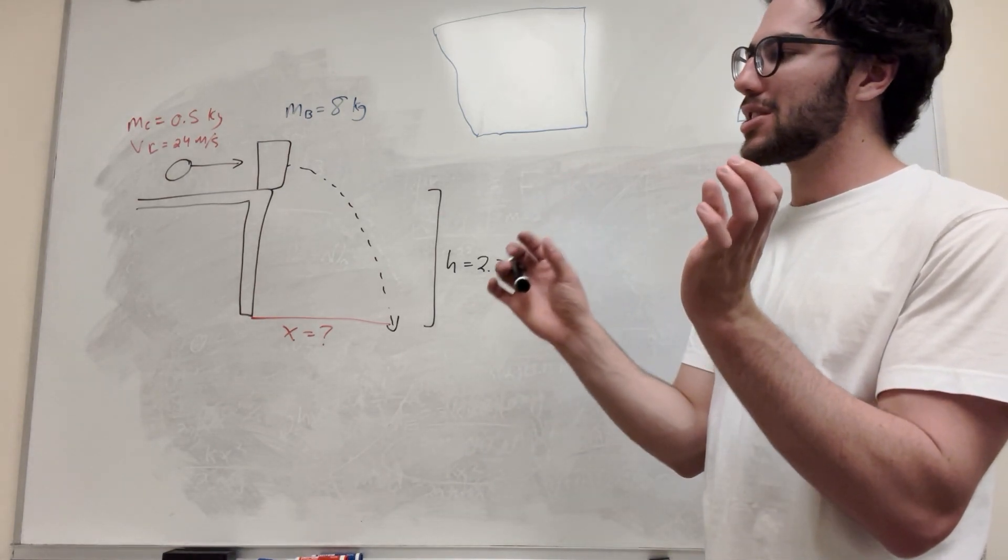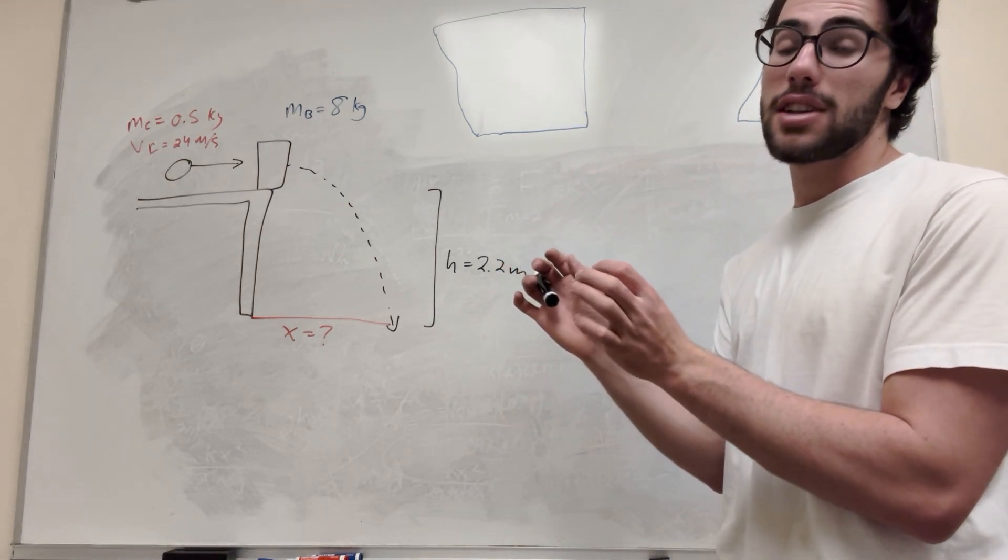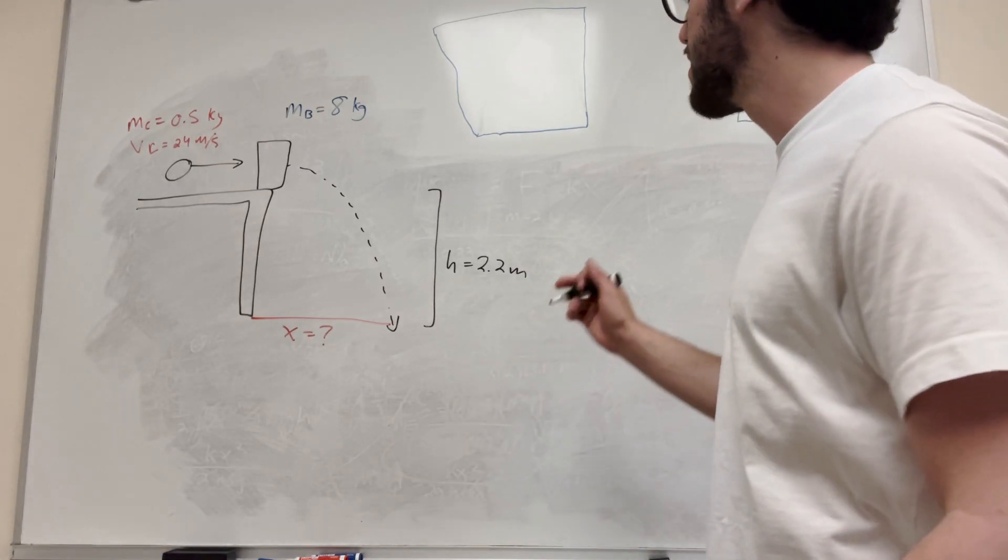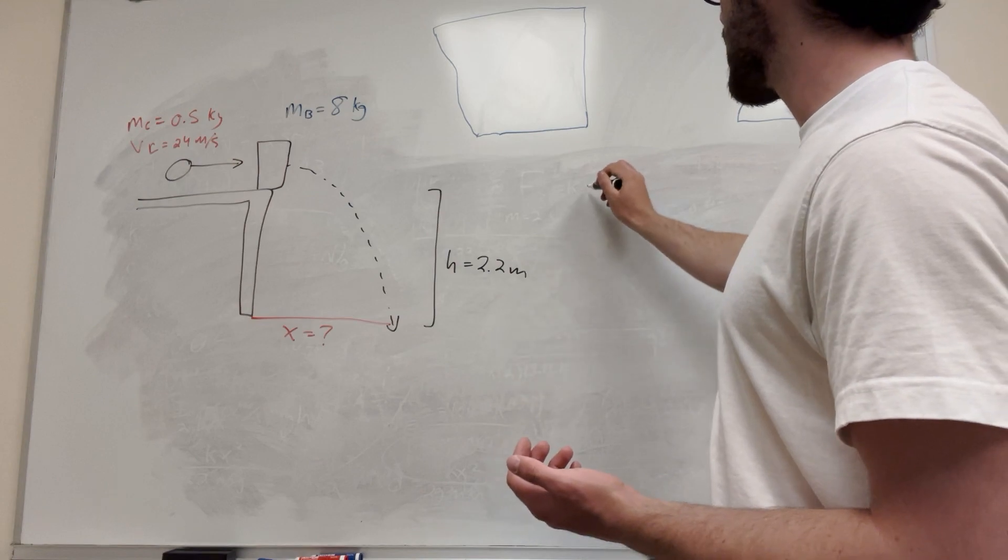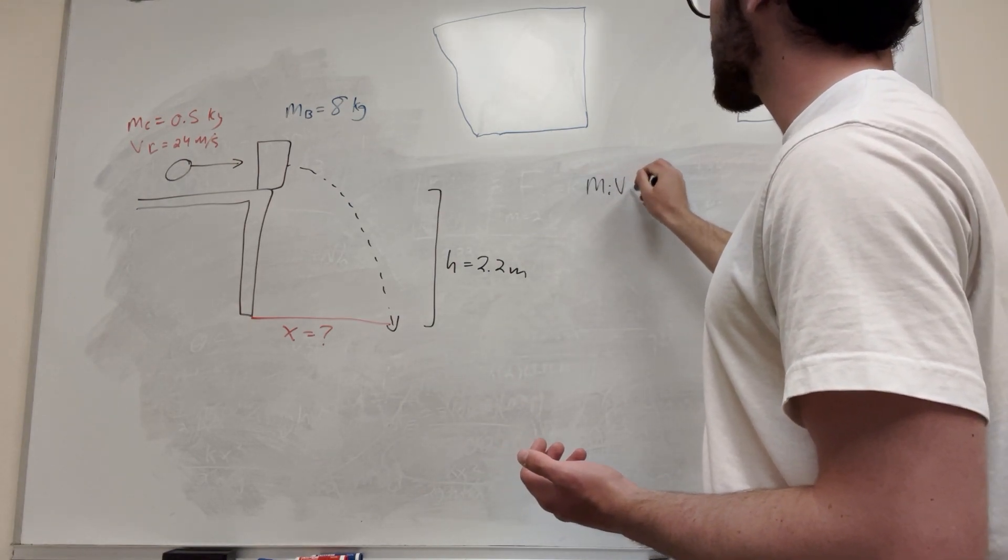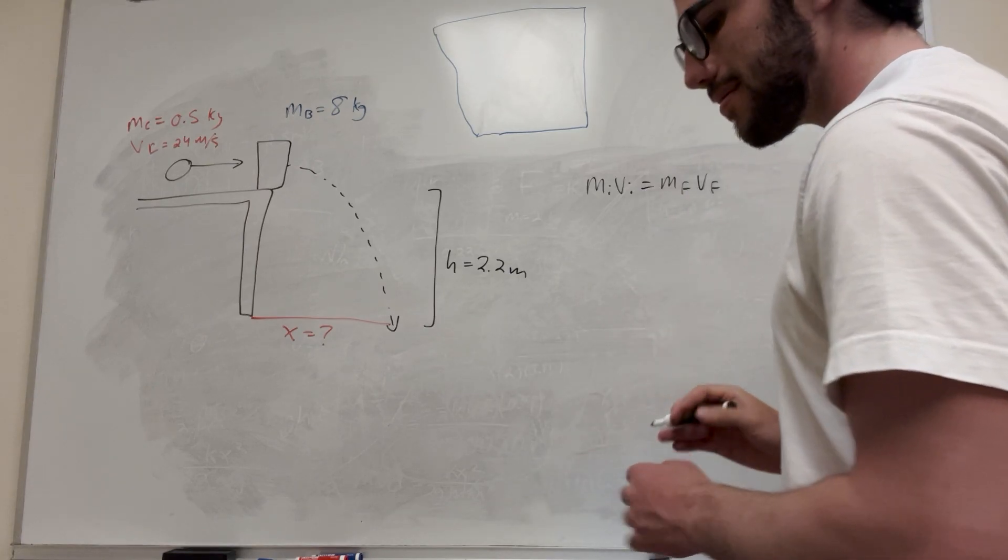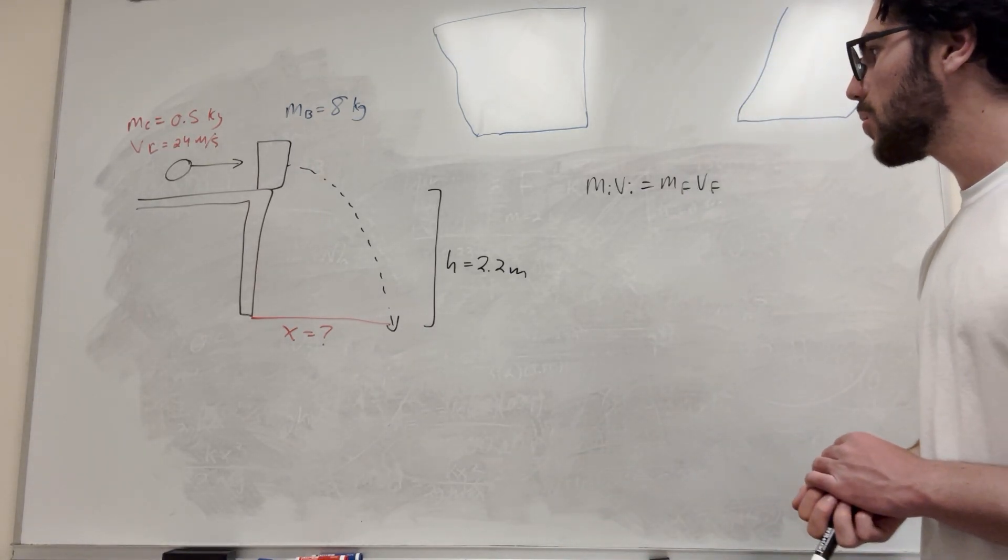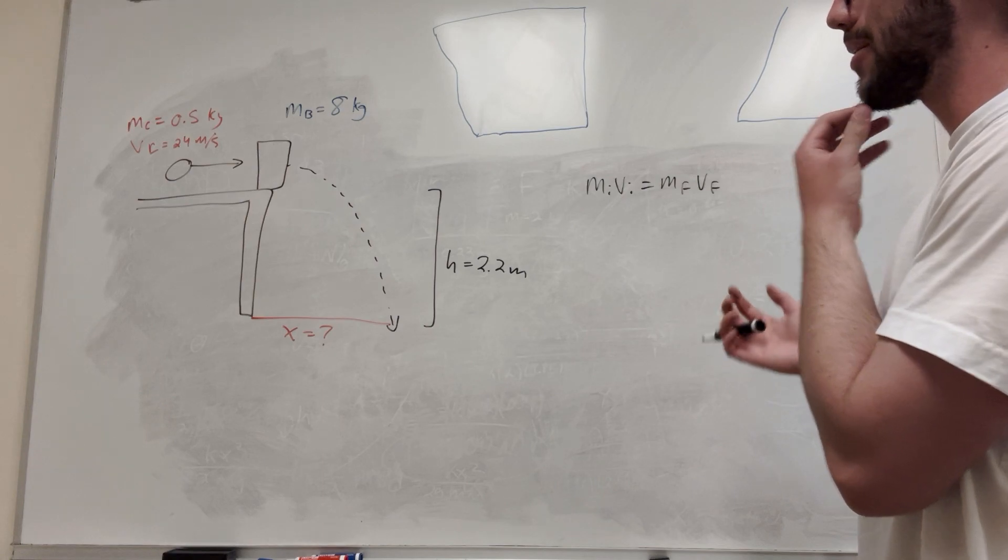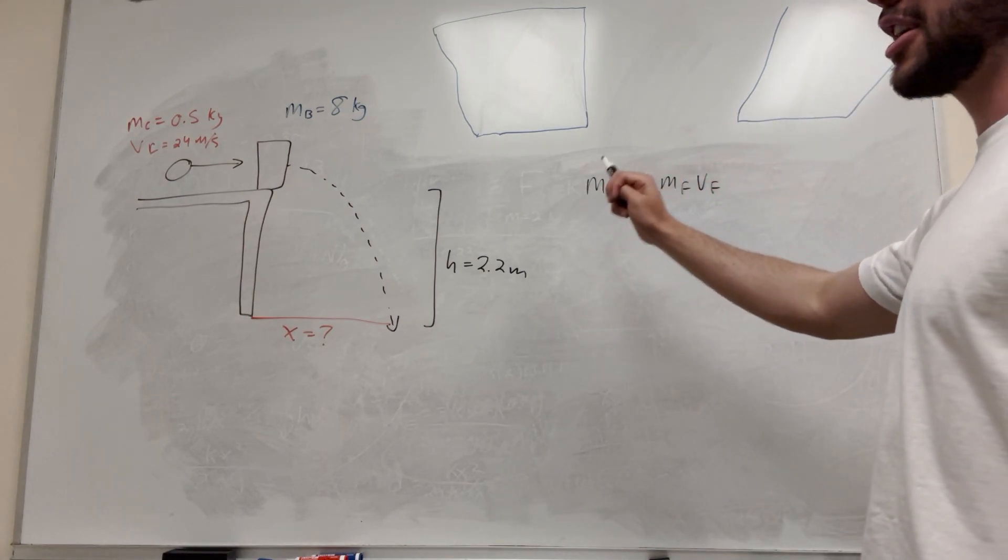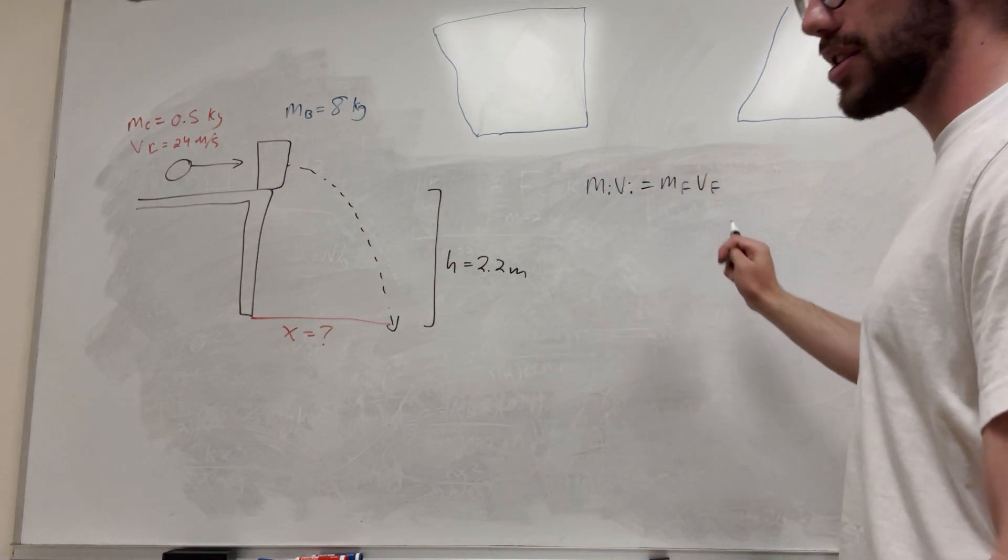So before these two interact, they're going to have a certain amount of momentum. And then after they interact, they're going to have the same amount of momentum, just mathematically described differently. It's going to be mass initial velocity initial is equal to mass final velocity final. We have two systems that turn into one system. So our initial is going to have two systems, and our final is going to have one system.